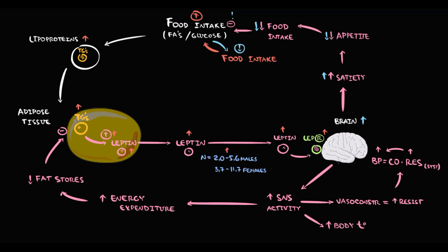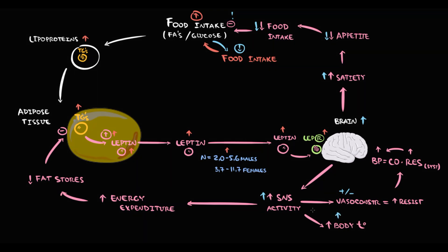Also, increasing leptin stimulation causes increasing sympathetic nervous system activity. This causes a mild increase in body temperature and mild vasoconstriction. But also the sympathetic nervous system causes increasing energy expenditure, which stimulates the breakdown of fat stores in adipose tissue. So by this mechanism, leptin regulates body mass.